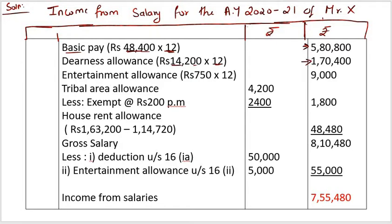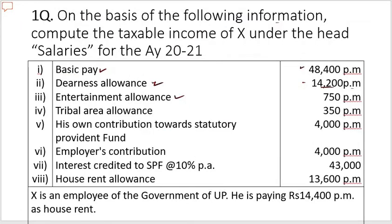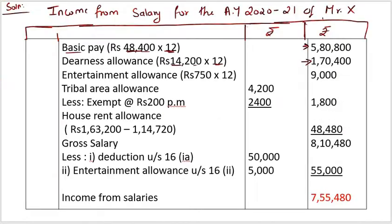Entertainment allowance is ₹750 per month, so the annual amount is ₹750 into 12, which is ₹9,000. As a government employee, an exemption is available under Section 16. The entertainment allowance is fully taxable initially, but a deduction is claimed later under Section 16(2).